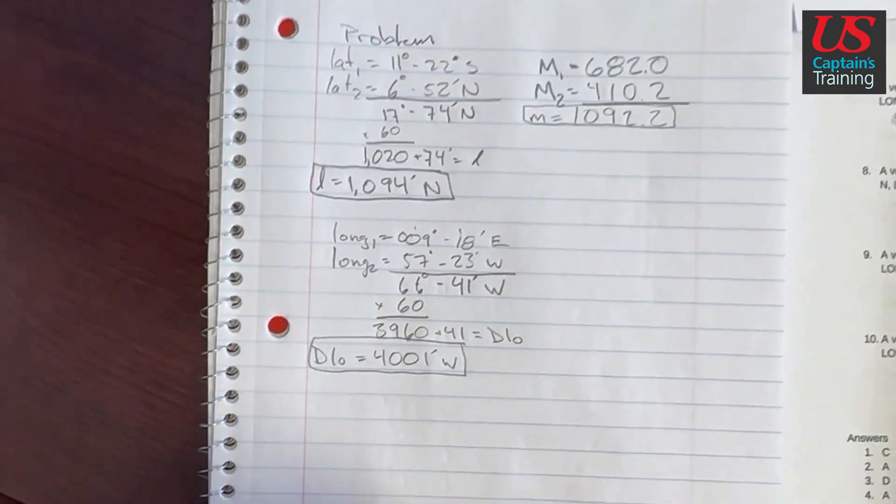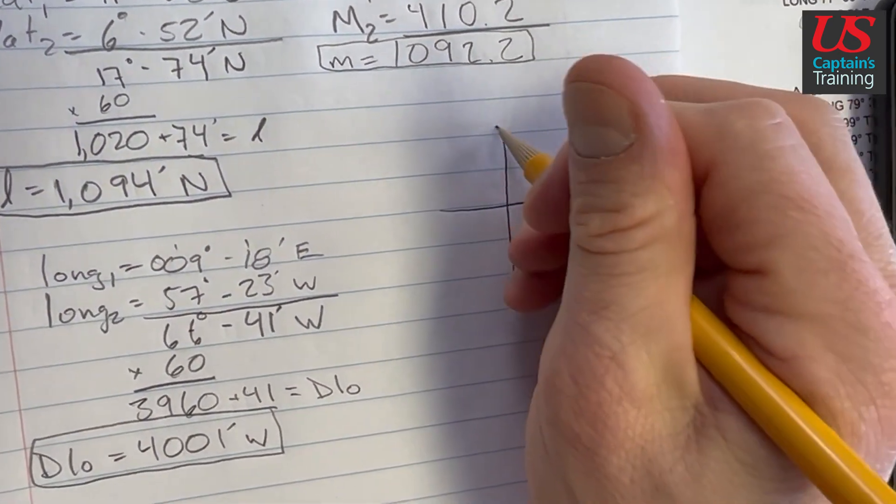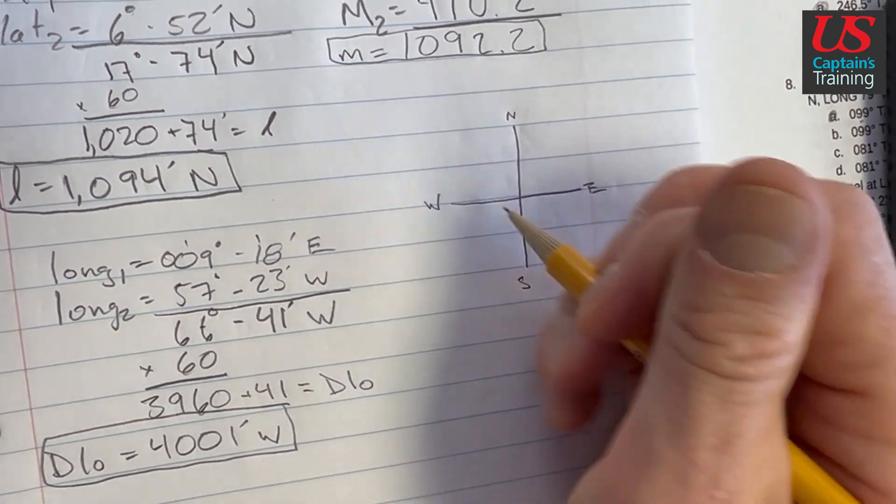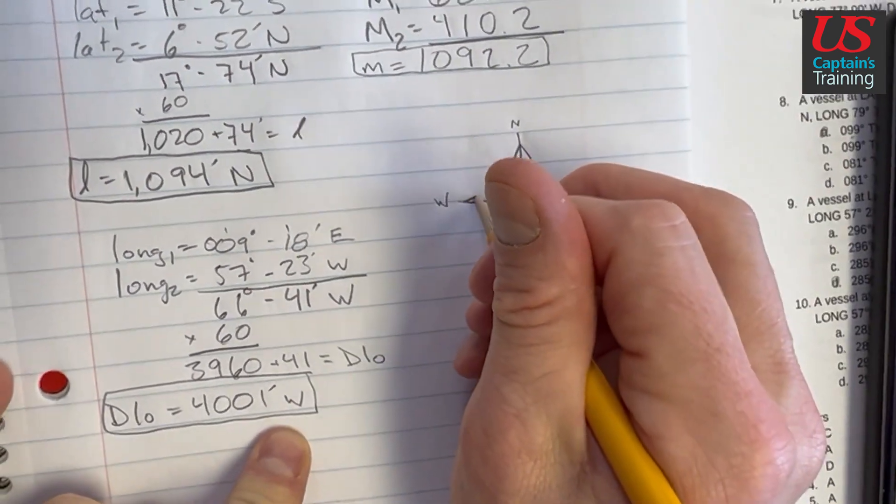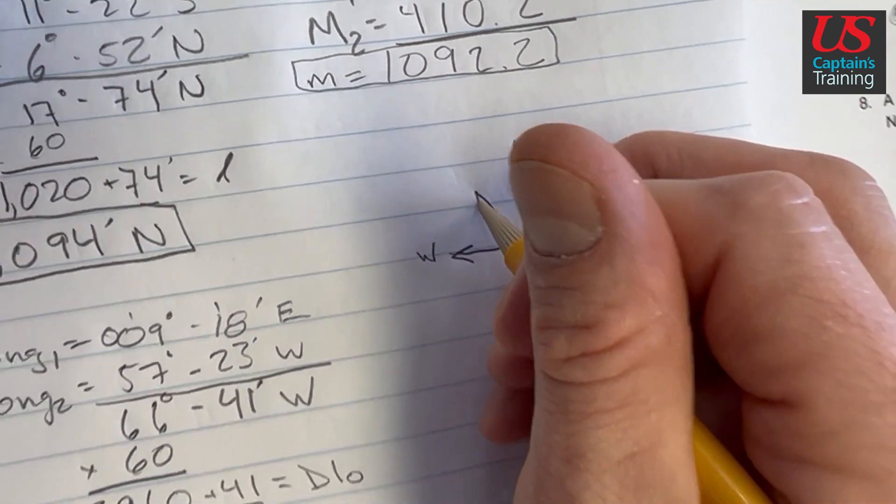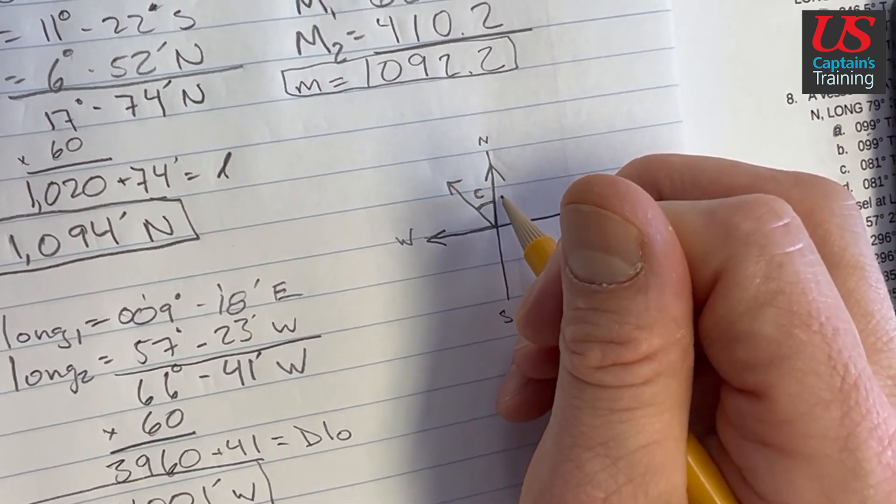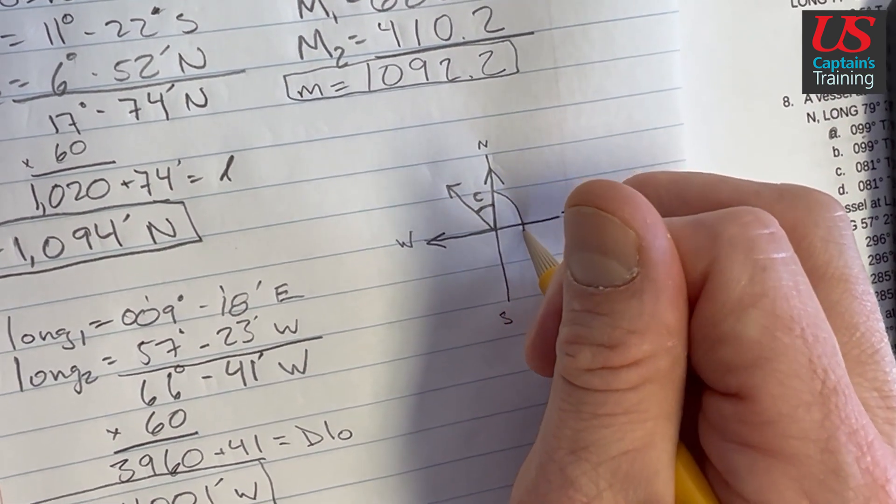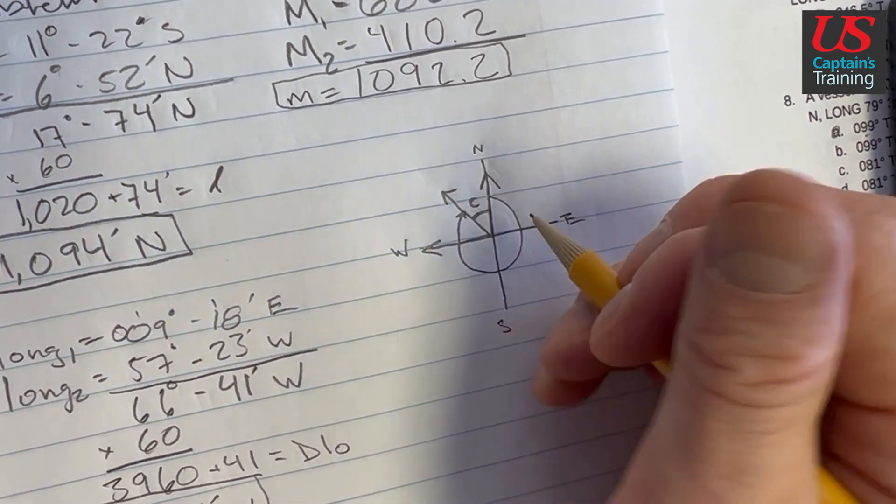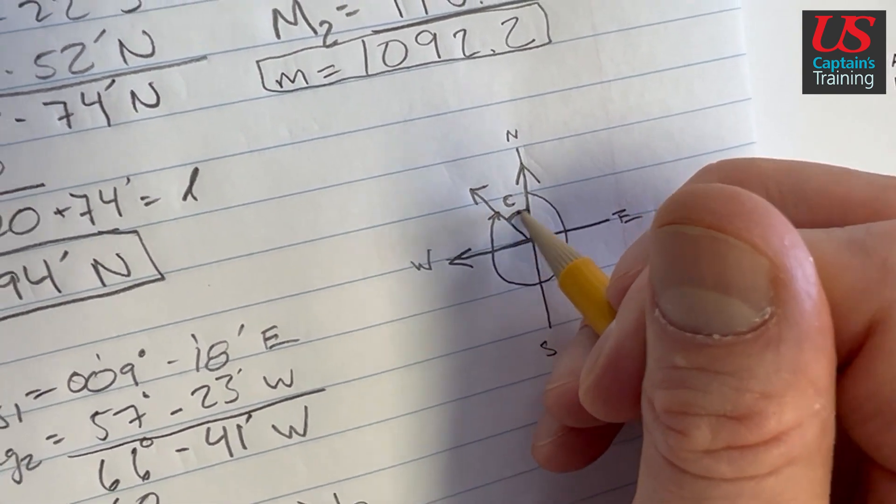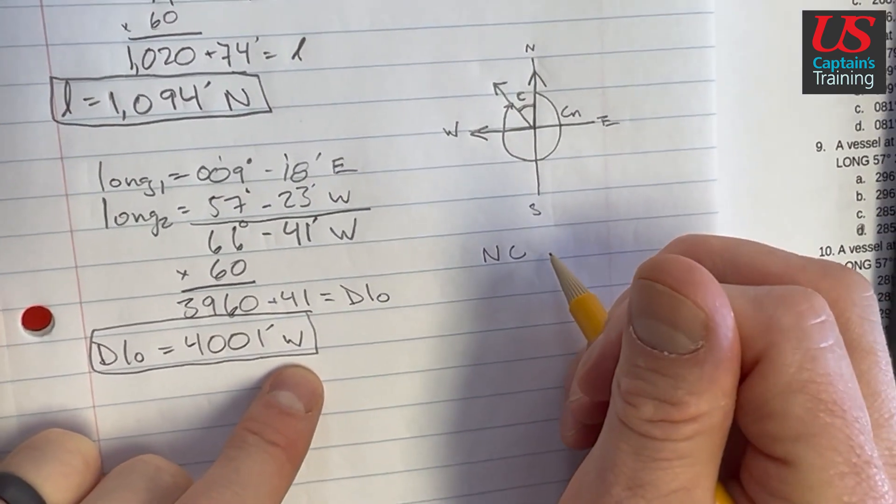Now let's figure out what quadrant we're in so we can find CN. So we'll put this in quadrant. We got north, south, east, west, and we went north. We went north and we went west. So we are going to be somewhere up in this quadrant here. And our C is going to be calculated from north. So this is our C and the problem is going to want CN, which is this distance from north. So it's going to want us to go all the way around and say how many degrees from north is our course. So we are going to take 360 degrees minus this C and that's going to give us our CN.